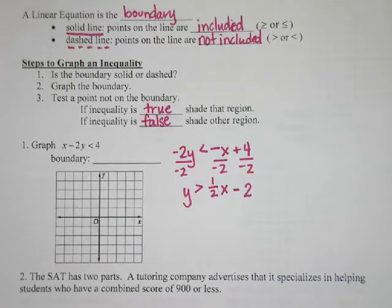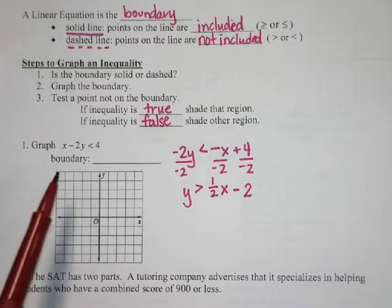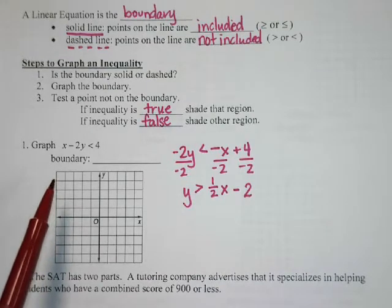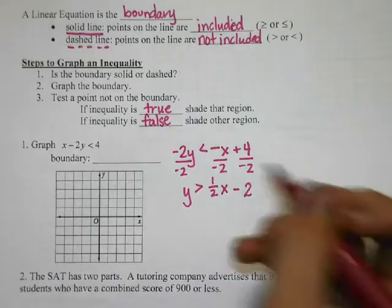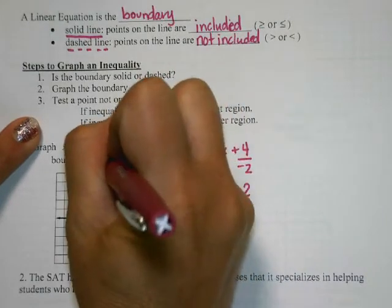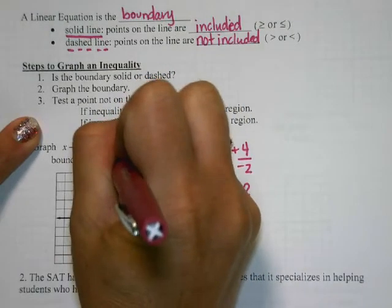Now it has a boundary. Is that guy solid or dashed? Dashed, right? He doesn't have the equal to with him, so we're going to have a dashed or dotted line.